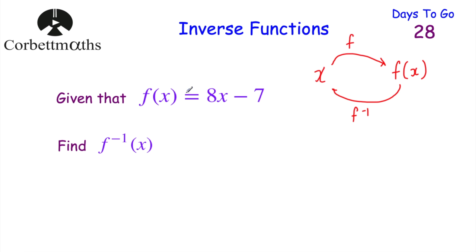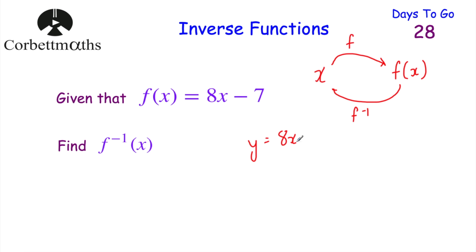If you're given that f(x) = 8x − 7, find the inverse function f⁻¹(x) — in other words, find what function you need to apply to go back to find x. So if I've got f(x) = 8x − 7 and I want to find the inverse function, I first let y equal 8x − 7, replacing f(x) with y.